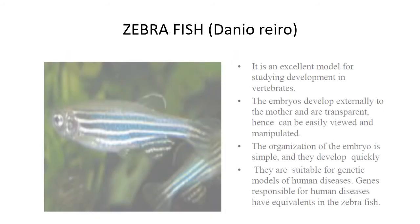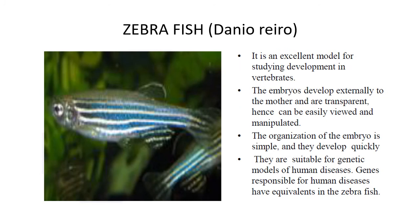Zebrafish — the scientific name is Danio rerio. It is an excellent model for studying vertebrate development. The embryos develop externally to the mother and are transparent, hence can be easily viewed and manipulated. The organization of the embryo is simple and they develop quickly. They are suitable as a genetic model of human disease, as genes responsible for human diseases have equivalents in zebrafish.